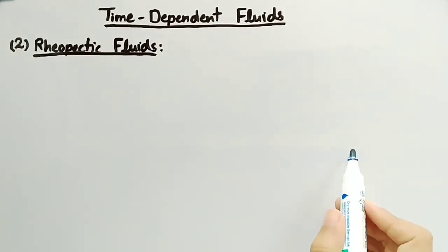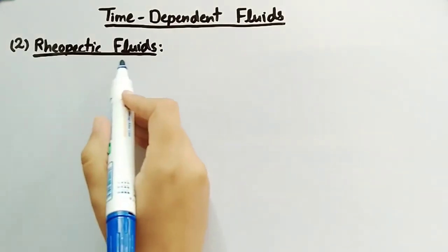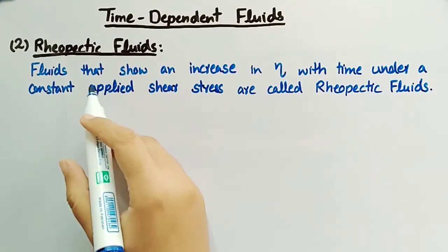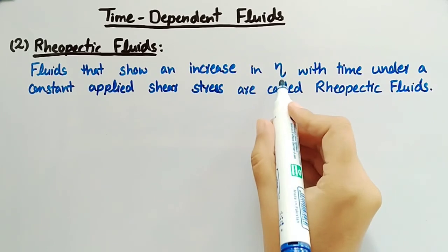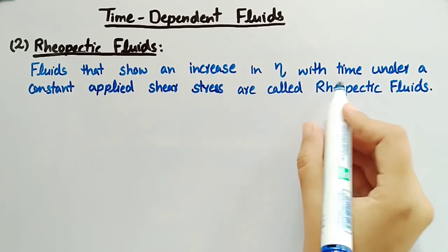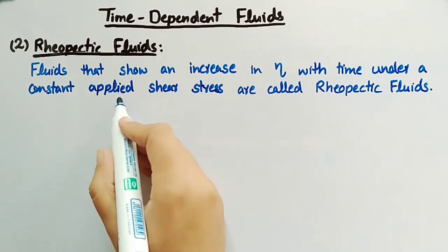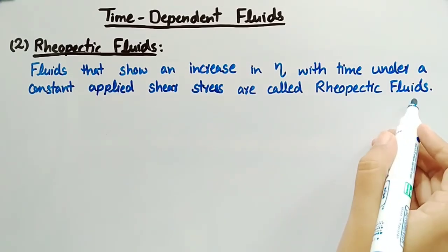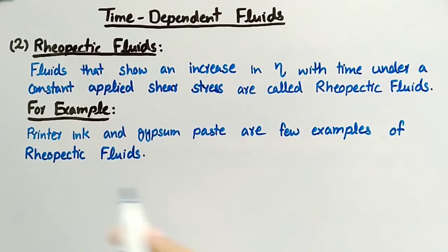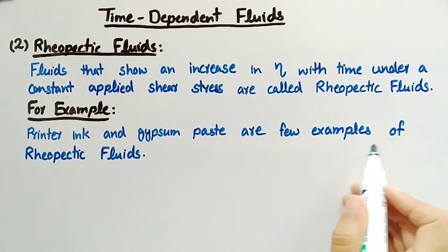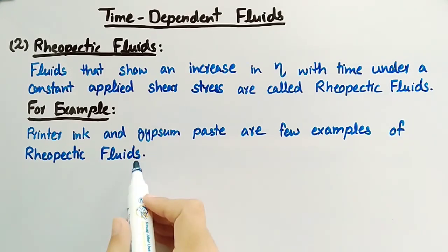Secondly, we will discuss what are rheopectic fluids. Fluids that show an increase in eta, where eta is apparent viscosity with time under a constant applied shear stress, are called rheopectic fluids. Printer ink and gypsum paste are few examples of rheopectic fluids.